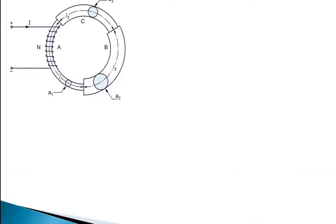You can see this diagram on the screen. This is the diagram of a simple series magnetic circuit. You can see there are three parts, that is A, B, and C.